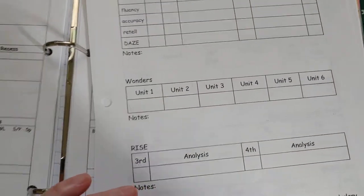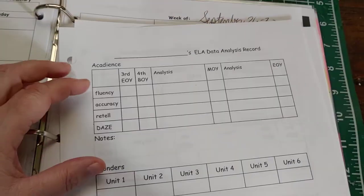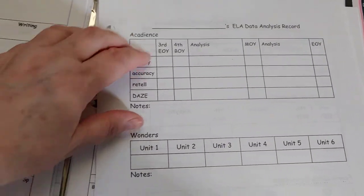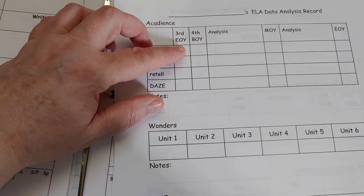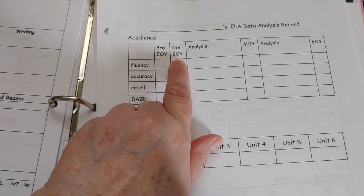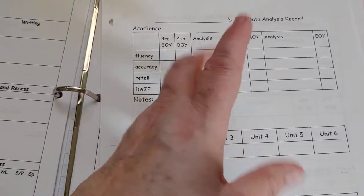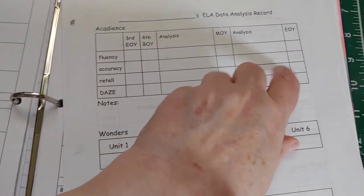They have each page has a front and a back. The front is ELA and the back is math. For example, my school requires cadence, so I start with the end of third grade scores—EOI means end of year—and then I do the fourth grade beginning of the year. This is a space where I can write some sort of analysis, and then the middle of the year and analysis, and then the end of year.